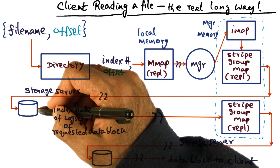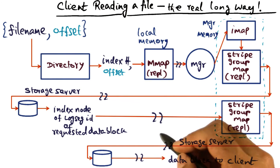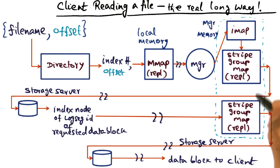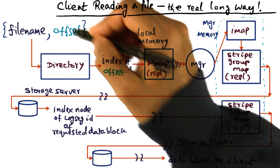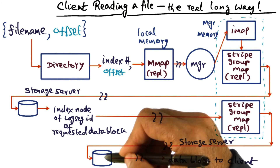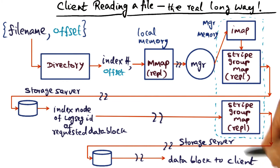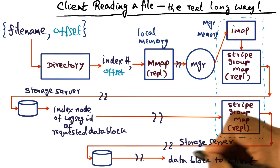Then the manager goes to the storage server to get the index node of the log segment ID for the requested data block. Once it has that, the manager looks up the stripe group map to see what storage servers have this log segment striped, and which storage server to contact for the particular portion of the file requested. That storage server is contacted and gives the data block to the client. So in this long path, there are network hops as well as accessing storage servers to pull the data blocks.